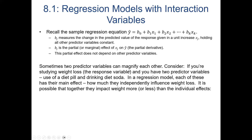Sometimes two predictor variables can magnify each other. Consider studying weight loss as your response variable with two predictors: one is a diet pill and another is drinking diet soda. In a regression model, each has a main effect — how much they independently influence weight loss. Together, they may also have an impact that is more or less than the individual effects. For example, if the diet pill curbs appetite and the diet soda fills you up without adding calories, together they might work better than each alone.